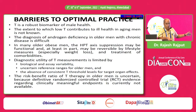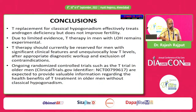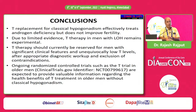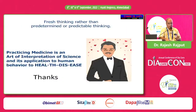These are some of the barriers to optimal practice that I have covered during this lecture — the reasons for so much confusion in this area. To conclude: testosterone replacement for classical hypogonadism — no confusion, we must treat, it is beneficial. Due to limited evidence, testosterone replacement for all elderly type 2 diabetic men with late onset hypogonadism is experimental. I have shown you the evidence and how to apply it in routine clinical practice.